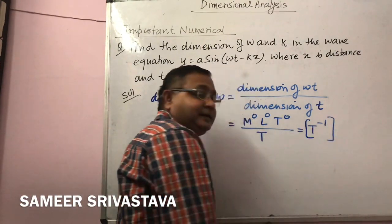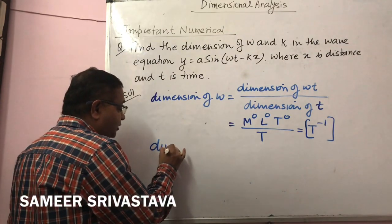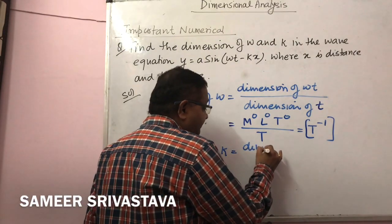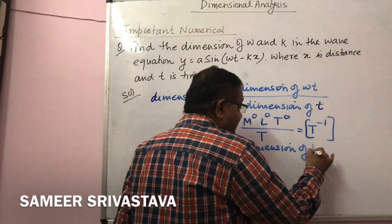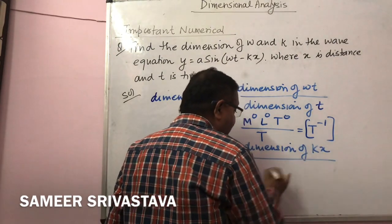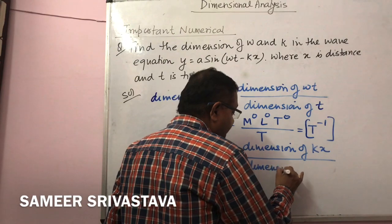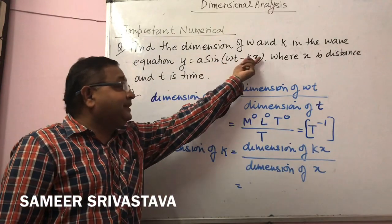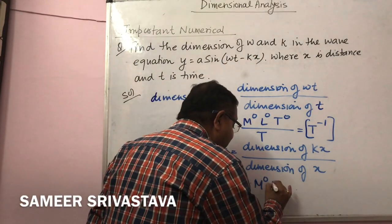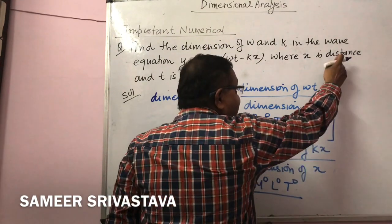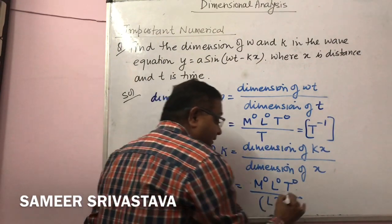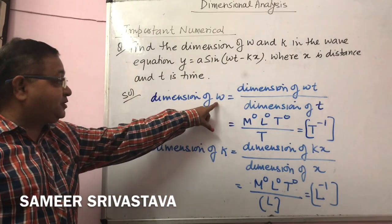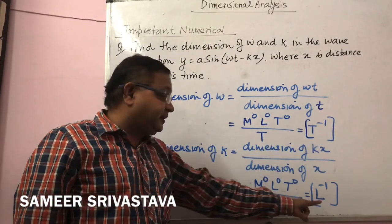The dimension of ω is T⁻¹. Similarly, for the dimension of K: dimension of K = dimension of (Kx) / dimension of x. Since Kx is an angle, its dimension is M⁰L⁰T⁰, and x is distance with dimension L. So dimension of K is L⁻¹.